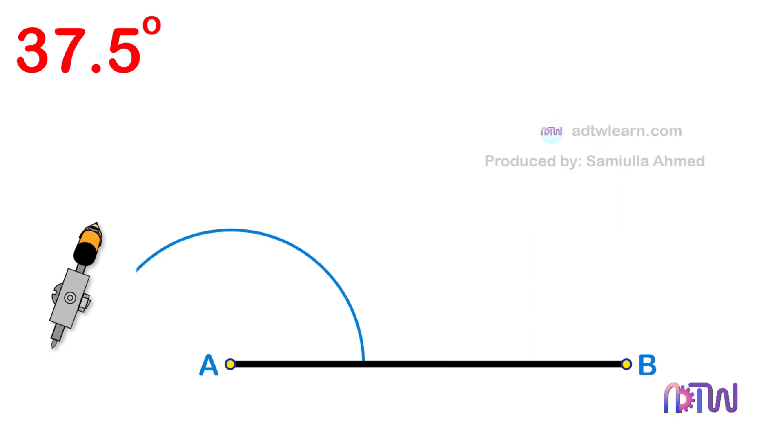After this, without changing the length of the compass and using this intersection point as a center, cut arcs as shown.